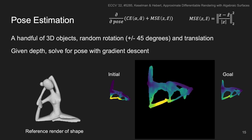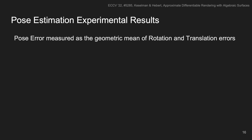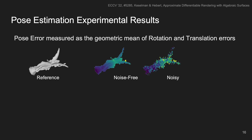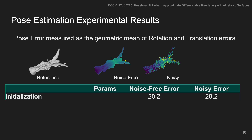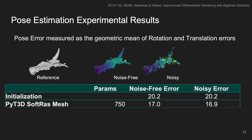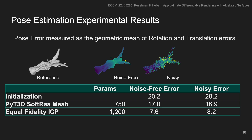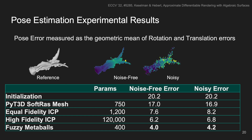We do experiments with pose estimation, trying to refine the pose of objects given perturbations. We measure the error as a geometric mean of rotation and translation error, and we compare against several baselines, both with a noise-free and a noisy version of the data. The initialization has an error of about 20, and the mesh renderer has an error of about 17. Classic methods actually perform better, getting an error of about 8. Giving classic methods far more points lowers the error to about 6 to 7. However, fuzzy metaballs, with a very low degree of freedom, is able to get an error of about 4.